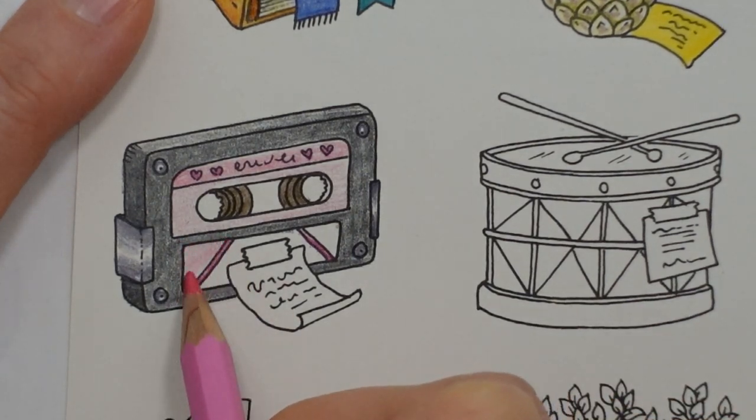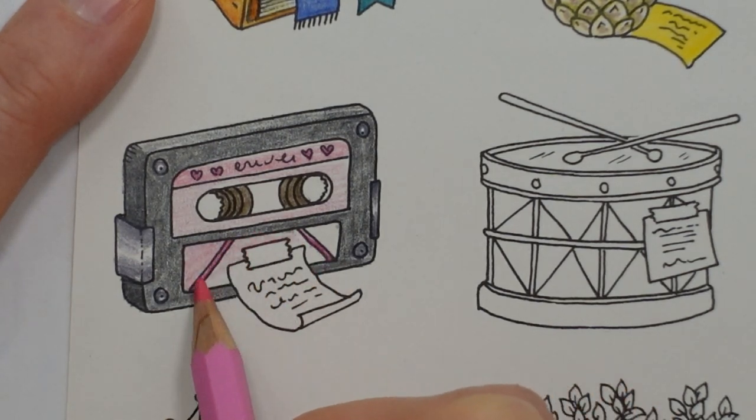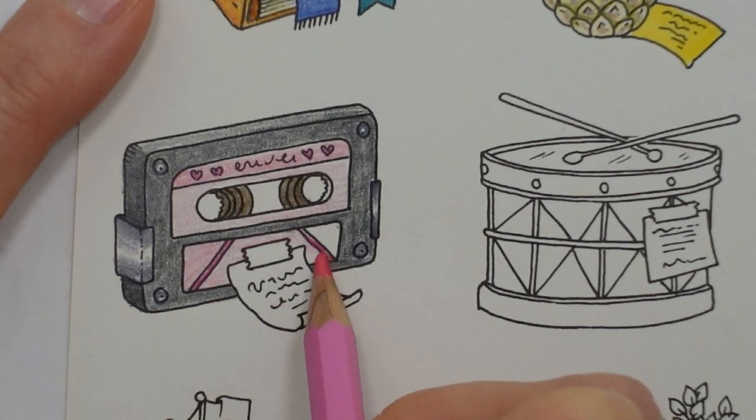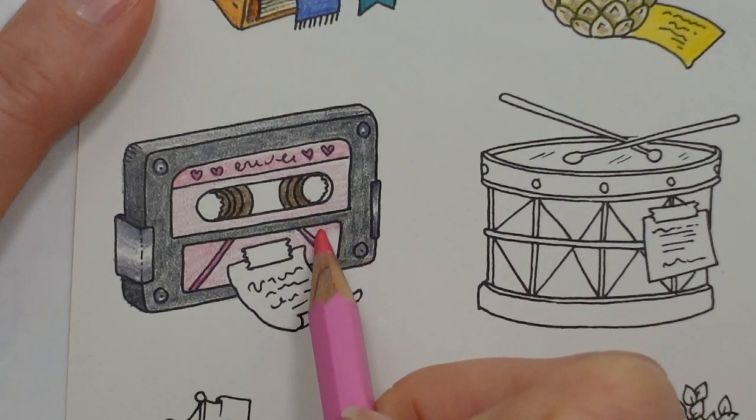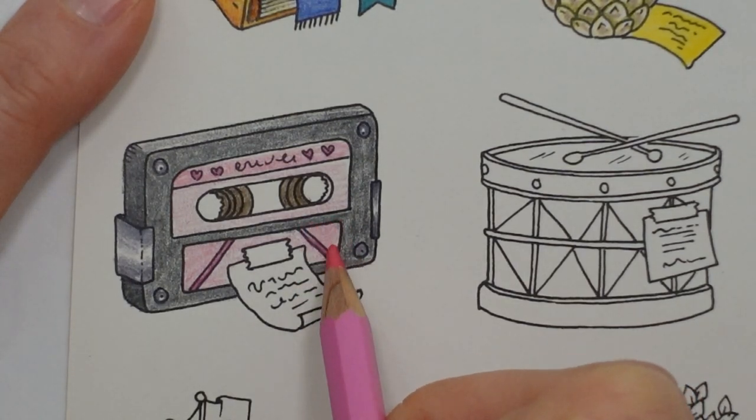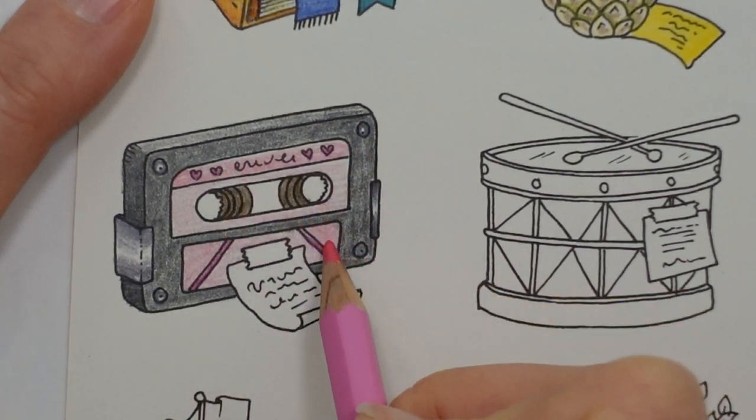And then maybe we'll make this bit so I'm layering up a little bit here a little bit darker than the center bit now tapes would often if you bought a commercial tape it would have a picture of the band on it or something.